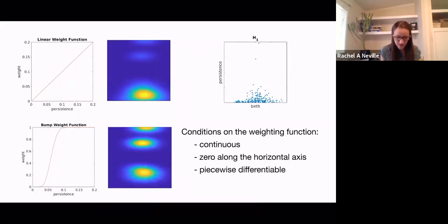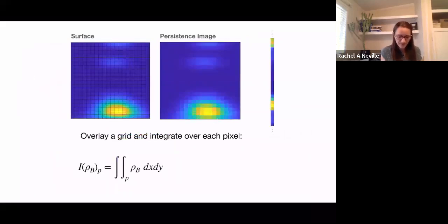So this would be a choice that you make based on your data. The conditions on the weighting function are that it's continuous, zero along the horizontal axis, and piecewise differentiable. Functions that are non-decreasing in y here work well, like a sigmoidal function or a piecewise linear function. So we're going to proceed just with the linear weight function. It's a fairly standard choice. You take your surface now, overlay a grid, and integrate over each pixel. And that will give you your persistence image, which if you would like, you can transform into a vector.